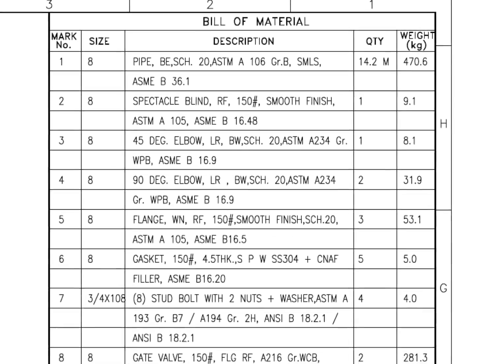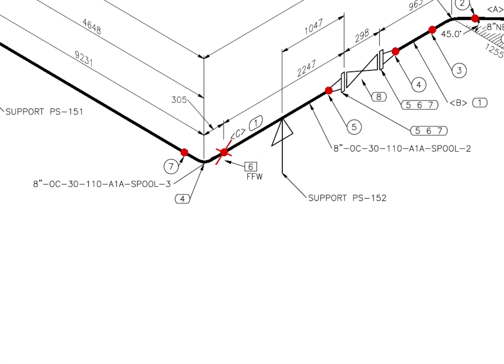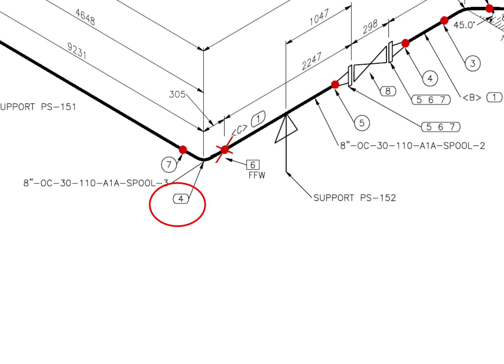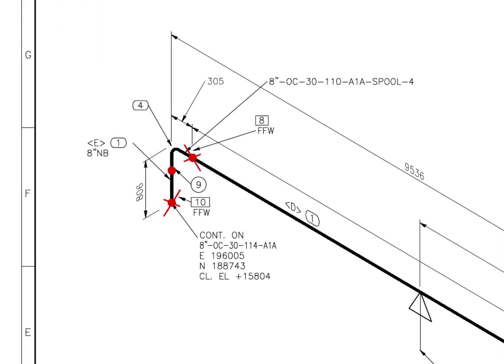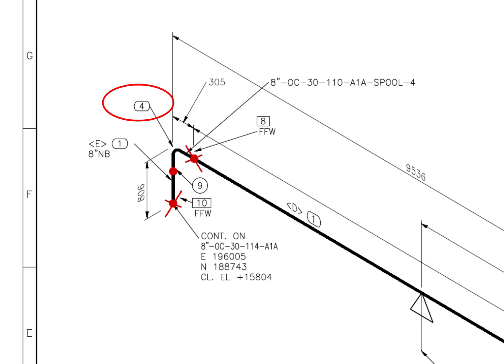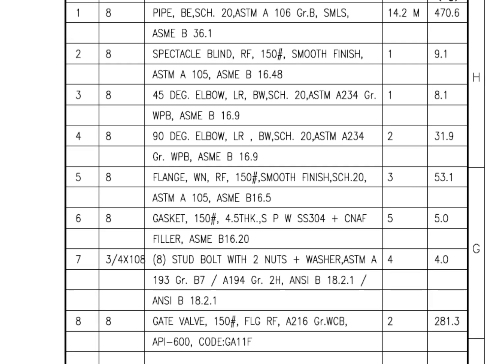Let us check what are the adjacent fittings. Item number 4 — look for what is on the other end. Both are the same item. Let us check the material list. 90 degree elbow, long radius, butt weld, schedule 20, and the size is 8 inch.